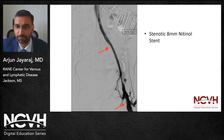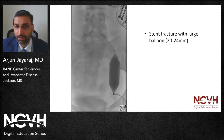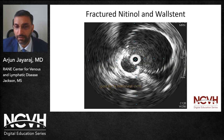This is an example of a stenotic 8 millimeter nitinol stent. The advantage that the nitinol stent offers is that it can be crushed and relined. Here it's being crushed with a 24 millimeter balloon, and then this is the IVUS image following relining the entire segment with an adequate caliber wall stent.